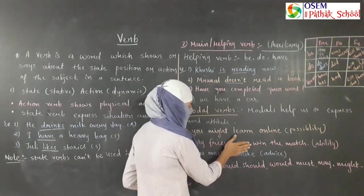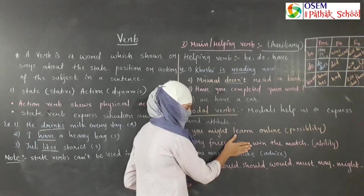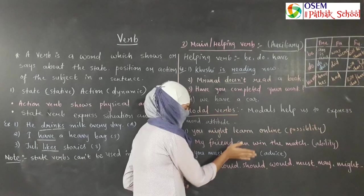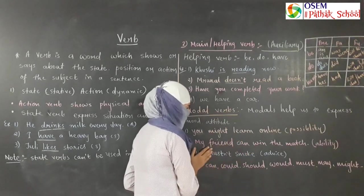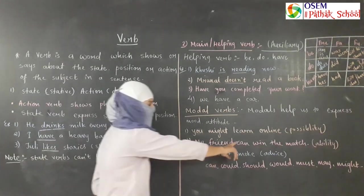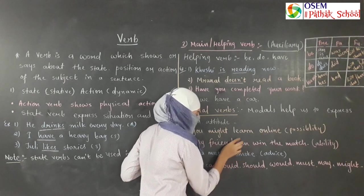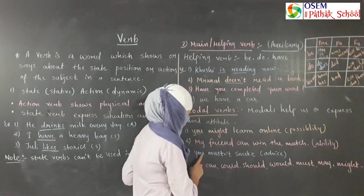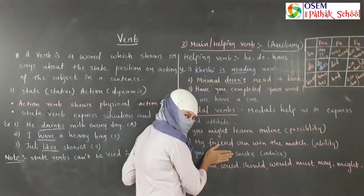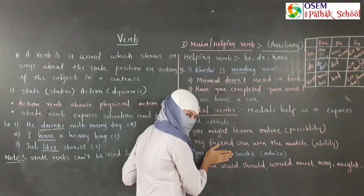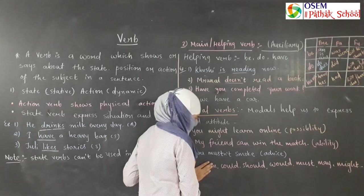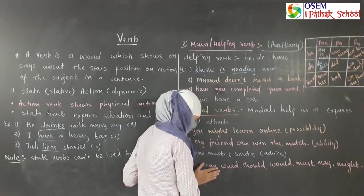'My friend can win the match' — if I remove 'can,' it doesn't show ability, but adding 'can' shows the ability of my friend to win the match. 'You mustn't smoke' — without 'mustn't,' there is no mood or attitude expressed, but 'mustn't' gives advice. We have many modal verbs such as can, could, should, would, must, may, might, and so on.